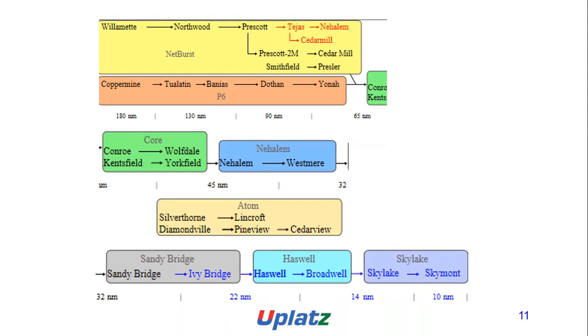Broadwell took the process from 22nm to 14nm. Skylake and Skymount took it further to 10nm. However, many other factors also grow exponentially, such as clock frequency and process improvements.